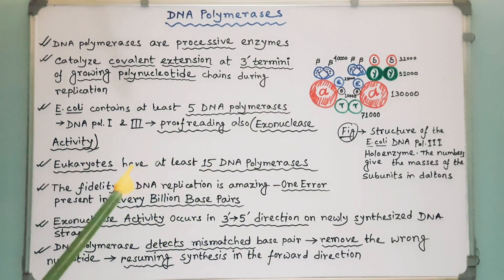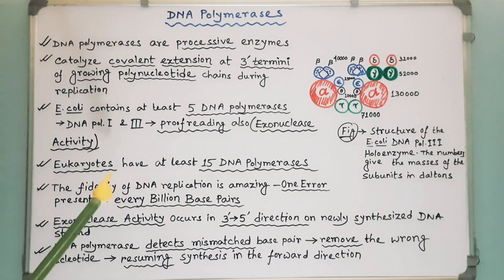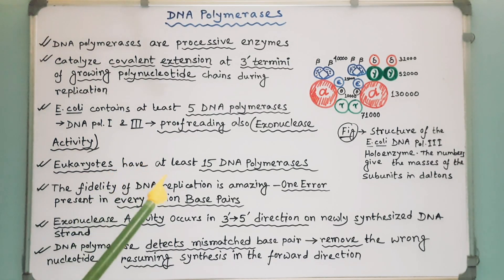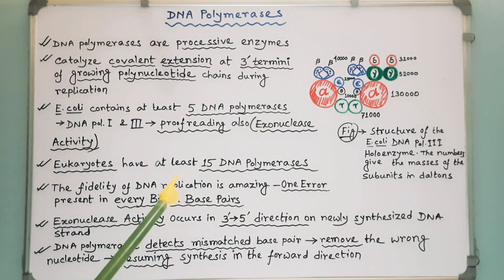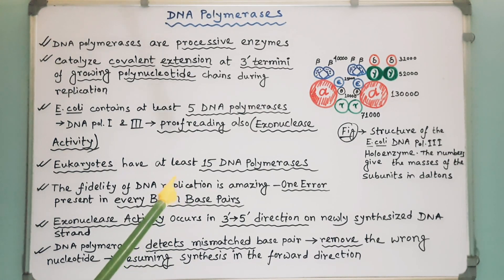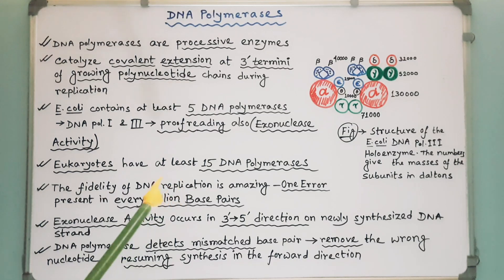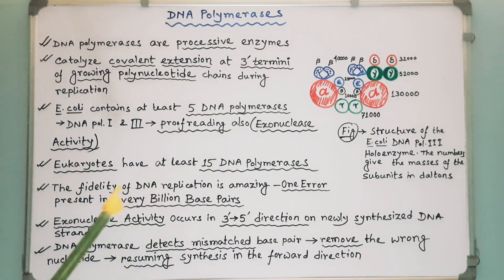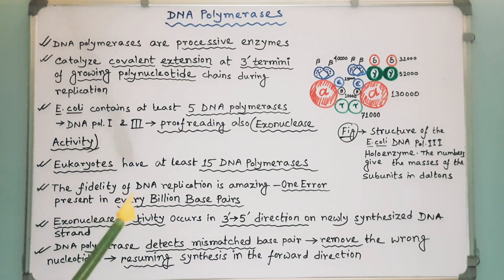Of them, DNA polymerase gamma, delta, and epsilon contain 3' to 5' proofreading exonuclease activities.